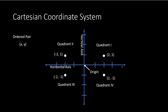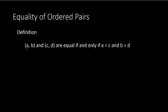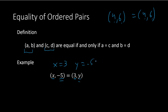Be careful with the negatives. Ordered pairs are equal if and only if their x values are equal and their y values are equal. For example, (4, 6) equals (4, 6). If we have (x, -5) equal to (3, y), then x must equal 3 and y must equal -5. Therefore, x equals 3 and y equals negative 5.